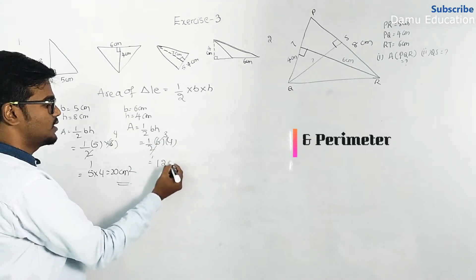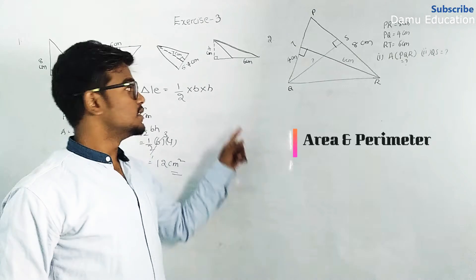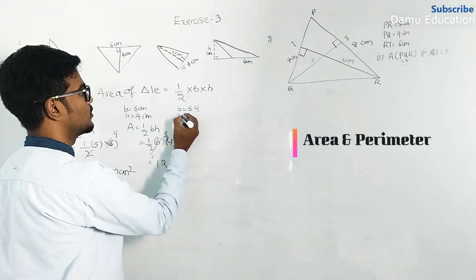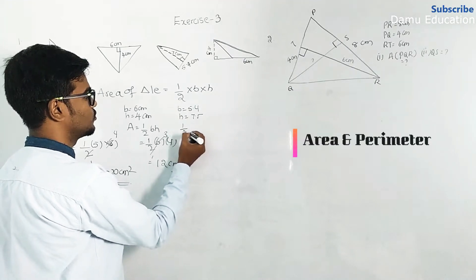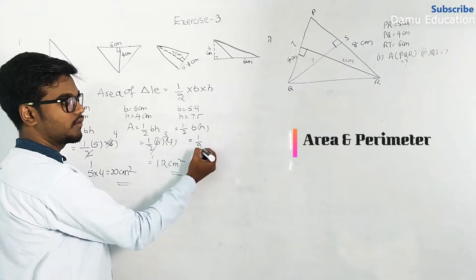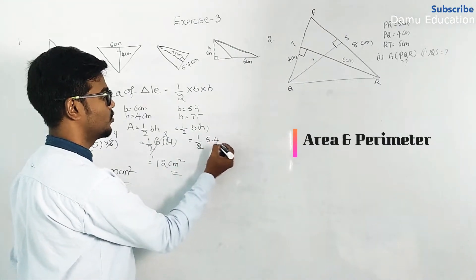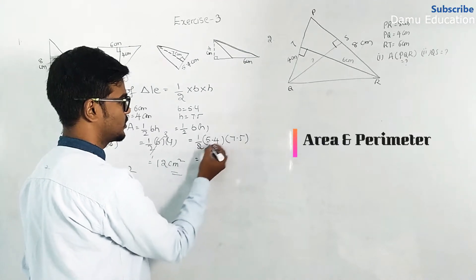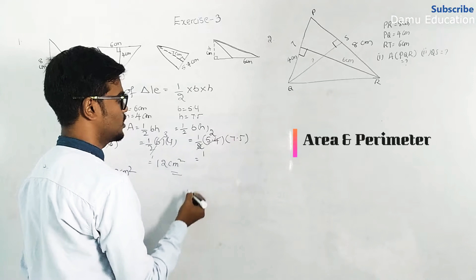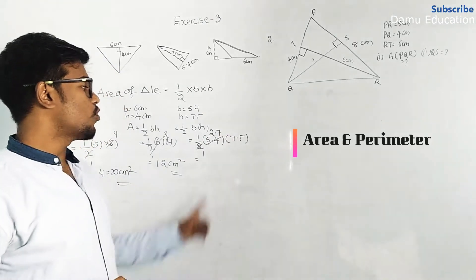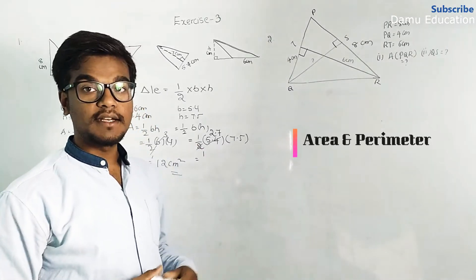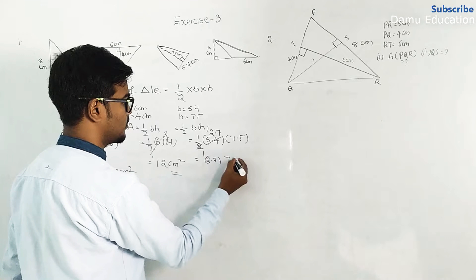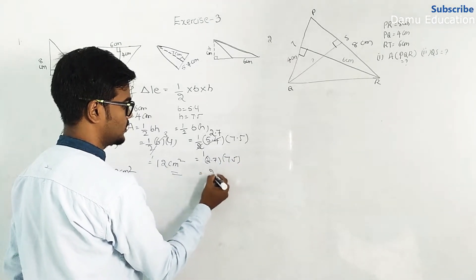That gives 12 centimeters square. Then for the third triangle, base is equal to 5.4 centimeters and height is equal to 7.5 centimeters. Area equals half into 5.4 into 7.5. Five point four divided by 2 is 2.7, then 2.7 into 7.5 equals 20.25 centimeters square.